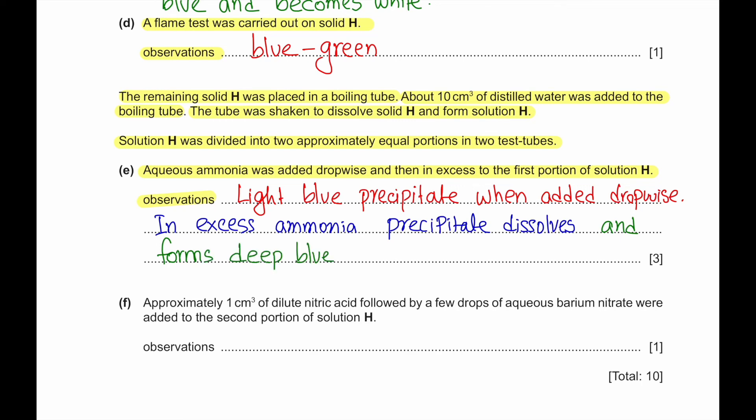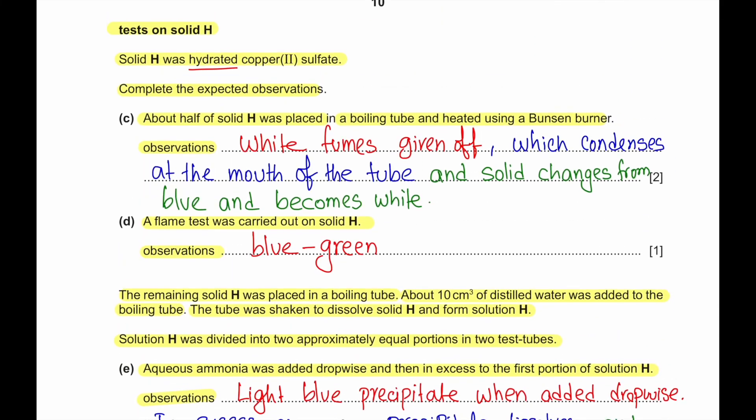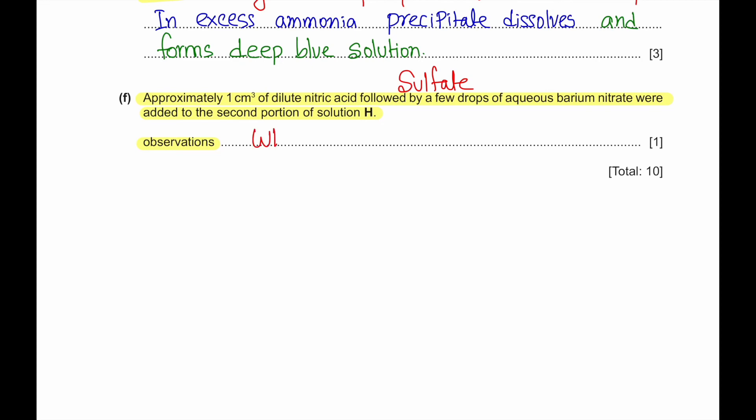Part F. Approximately one cm³ of dilute nitric acid followed by a few drops of aqueous barium nitrate were added to the second portion of the solution H. So what would be the observation? Now when we add nitric acid followed by an aqueous barium nitrate we are trying to test for sulfate. This is a classic test for sulfate presence of sulfate. Since this is hydrated copper to sulfate and there is sulfate present, so the observation will be white precipitate.